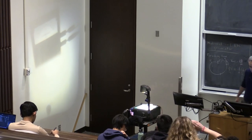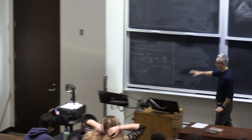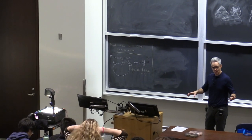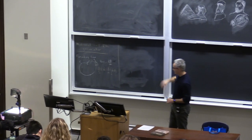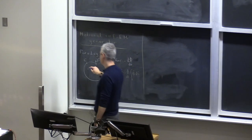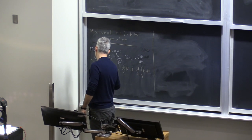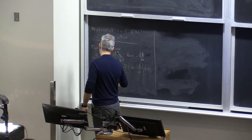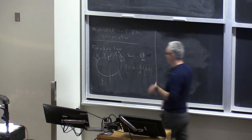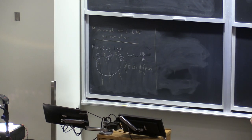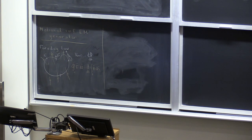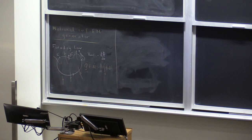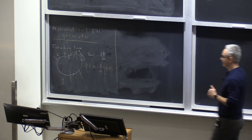According to Faraday's law, whenever you have a loop — existing or virtual — that intercepts time-varying magnetic flux, that time-varying magnetic flux may be coming from a magnet that is moving, or by a circuit that generates magnetic flux in a time-varying way. For example, a solenoid that is fed by a time-varying sinusoidal current.